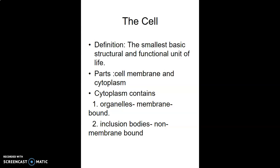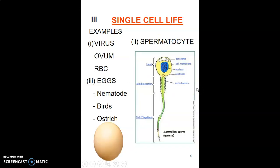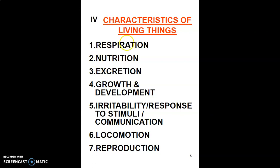and inclusion bodies that are non-membrane bound. We have single-cell organisms which you studied in secondary school, such as paramecium, protozoa, algae, and bacteria. Other examples include the virus, red blood cells, the ovum — those are single-cell lives. Characteristics of living things include respiration, nutrition, and excretion.